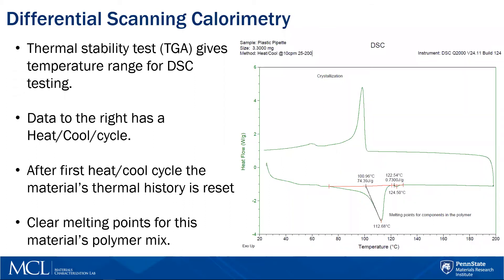As we look at the curve now, we can see there are clear melting points as well as crystallizations. This polymer appears to have at least two components in it. We do not see a glass transition, so I am thinking I need a wider range, possibly running colder.